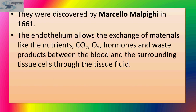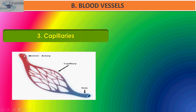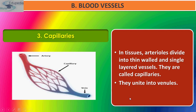Capillaries were discovered by Marcello Malpighi in 1661. The endothelium — the innermost layer made up of flattened endothelial cells — allows the exchange of materials like nutrients, CO2, O2, hormones, and waste products between the blood and surrounding tissue cells through tissue fluid. In tissues, arterioles divide into thin-walled, single-layered vessels called capillaries, which then unite to form venules. They form a dense network in organs and join arteries with veins, and are 4 to 10 micrometers in diameter.